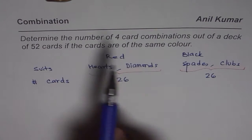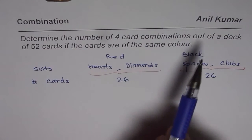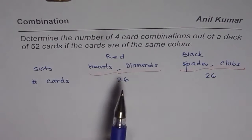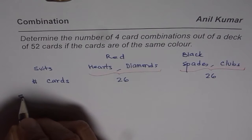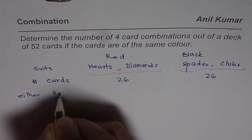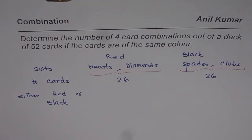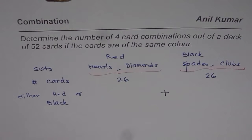Let's read the question once again. It says: determine the number of four card combinations out of a deck of 52 cards if cards are of the same color. So either they could be red or black. Since we have this OR condition, that makes it clear that we need to add. Now it is a case of combination because in a hand of four cards, the order does not matter — it remains exactly the same.